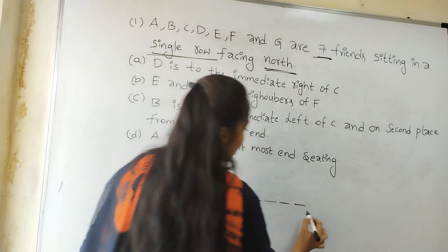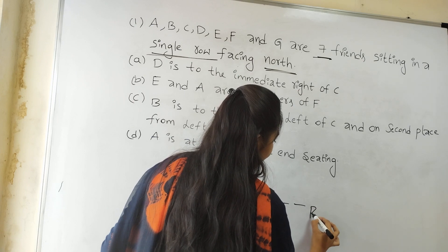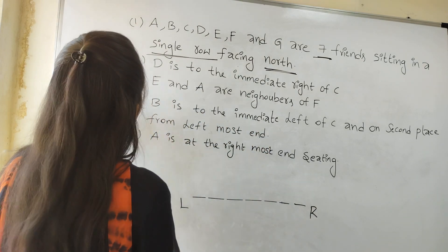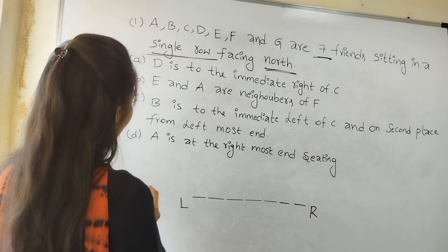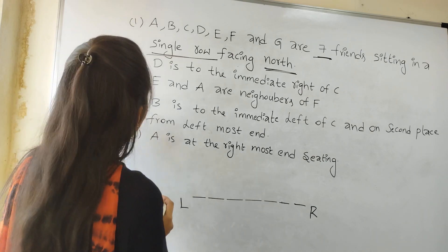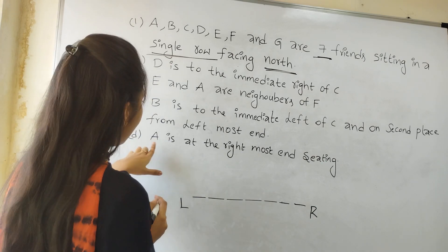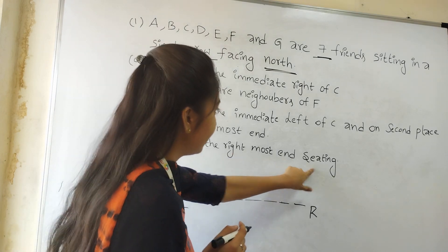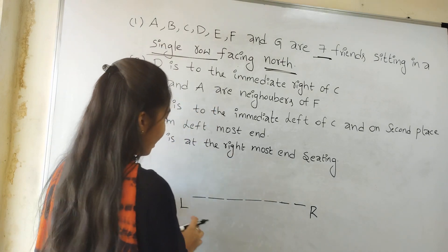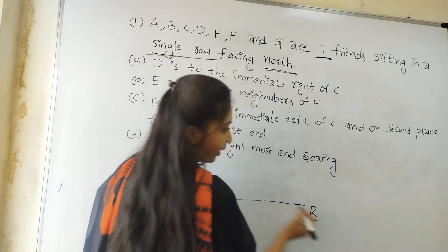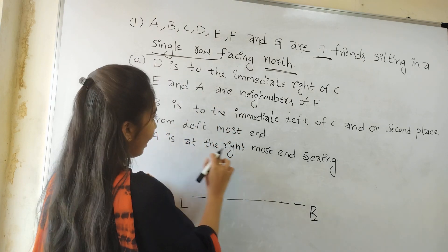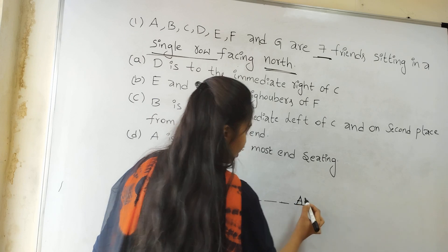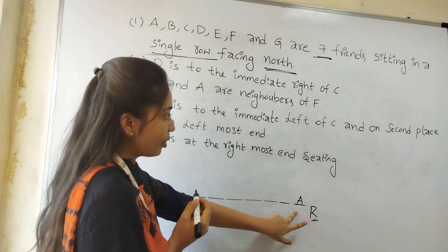So, North direction — this is the right side and this is the left side. We have some options here. I will take option D. A is at the rightmost end seating. So where is the right here? This is the right side. A is placed at the rightmost end.